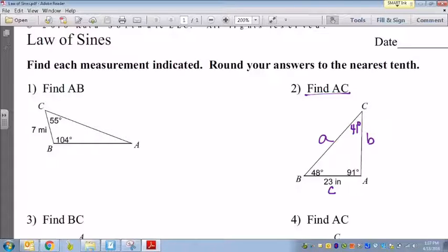Now looking at my triangle, using the Law of Sines I need to know an angle and a side that both match up. So both angle C and side C match up. That means I can do sine of 41 over 23.